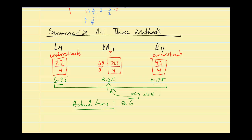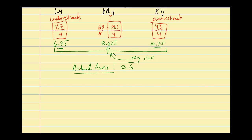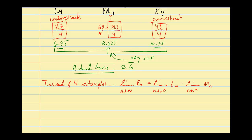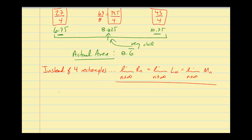If 4 rectangles gave a great approximation, 100 would be even better. The ideal approach is an infinite number of rectangles. We take the limit as n approaches infinity of any of the three methods — right endpoint, left endpoint, or midpoint — and we'll get the exact area under the curve regardless of which method we use. But first we need to review summation notation and limit notation.